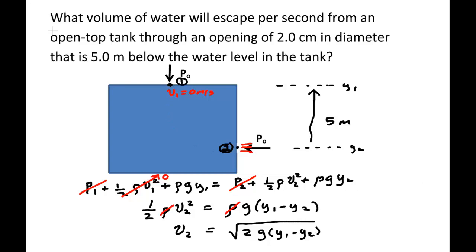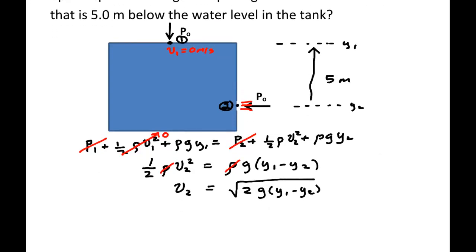Now they wanted, not that, but they wanted the flux. So to find the flux, we've got to take this speed here and multiply by the area of that hole. So I remind you that flux, which is the amount of water, that is the volume divided by time, is equal to the velocity at 2 times the area at 2.